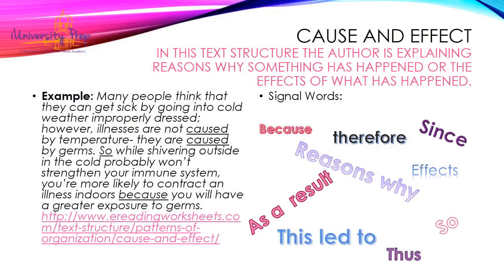The next text structure is cause and effect. Problem-solution and cause and effect are two of the most confused text structures because often times some of the key words could be very similar, but they are different. A cause and effect text structure is where the author is explaining reasons why something has happened or the effects of what has happened. Some signal words to look for are: because, therefore, since, effects, reasons why, as a result, this led to, thus, and so. Be really careful on cause and effect versus problem solution. Problem solution, you're always going to have some kind of problem or issue and they're going to solve it. Cause and effect is explaining why things are happening or the effects of what has been going on. Here's an example.